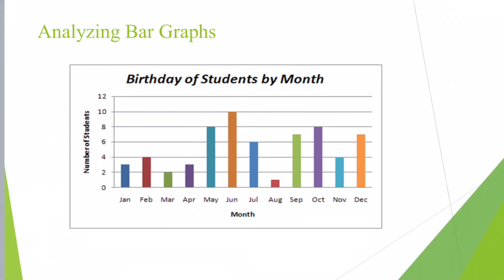In this slide, we'll learn how to analyze the given bar graph. As we can see, the title of the bar graph is 'Birthday of Students by Month.' On the X axis we can see the months of the year, and on the Y axis we can see the number of students. The highest number of students celebrate their birthdays in June; however, the least are in August.